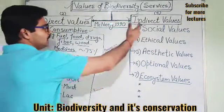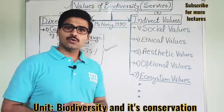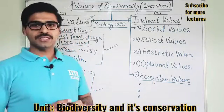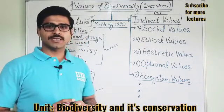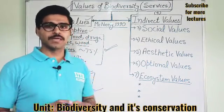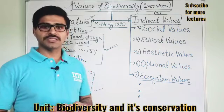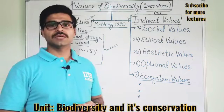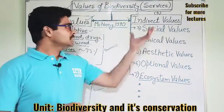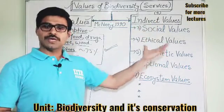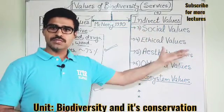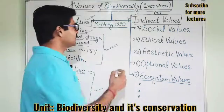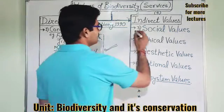Now let us discuss indirect values of biodiversity. This means we are not getting anything directly, but in nature and in the ecosystem, different species play different roles and provide different services to all human beings. So one by one I will explain these.